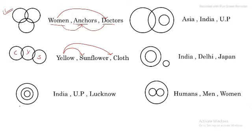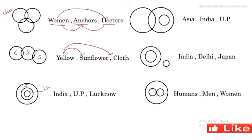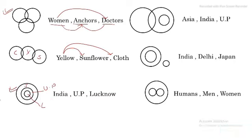Let us see the next Venn diagram — India, UP, Lucknow. India mein UP hai aur UP mein Lucknow. The big circle is India, the middle circle is UP, and the smallest circle is Lucknow. So India mein UP hai, UP mein Lucknow. This type of relationship — fully nested circles — can be shown by this type of Venn diagram.